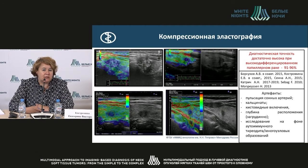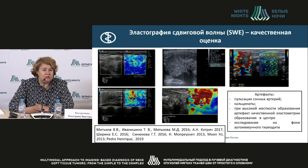There are artifacts as in any method, such as high position of the carotid arteries, calcifications, and large cysts. In compression elastography, the depth of the lesion location is also an artifact. It is also difficult to detect in cases of multiple nodes or in autoimmune thyroiditis.